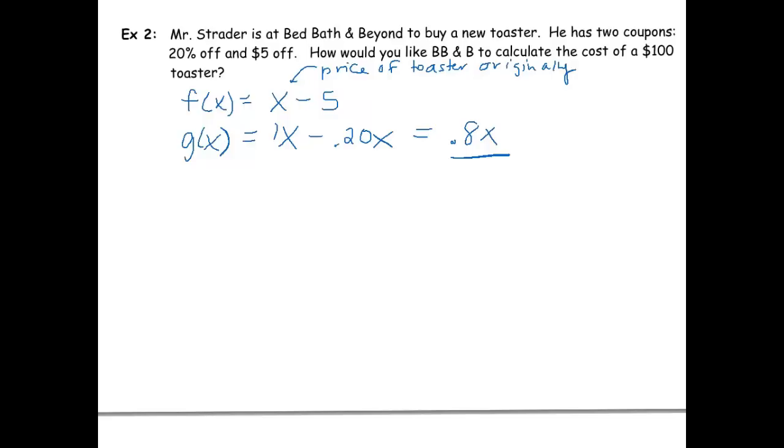So I am going to do a composition. I'm going to say, let's do the $5 off first, get an answer, take that answer, and plug it into the g(x) function. So that's doing the $5 first and the 20% second. Let's see what we get. That's the same as g of x minus 5, because that's what f(x) is. And we're going to take x minus 5 and substitute it into the g(x) equation. So .8 times x minus 5, which becomes .8x minus 4.